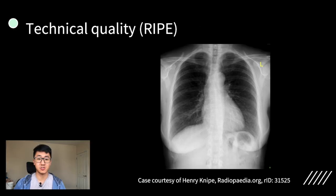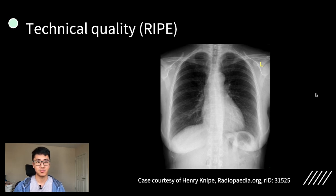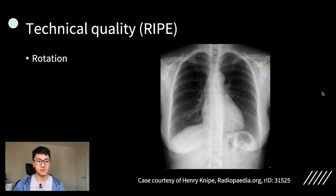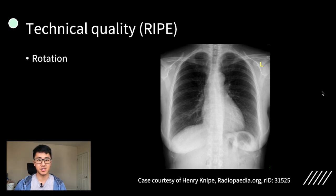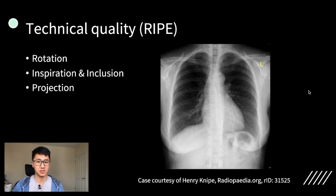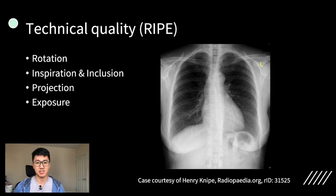Now let's talk through the steps you should take when interpreting every chest radiograph. It's important to have a clear structure because a systematic approach is the only reliable way not to miss anything. The first thing to assess is the technical quality of the image because this will affect your interpretation. The acronym that people often use is RIPE, which stands for Rotation, Inspiration and Inclusion, Projection and Exposure.